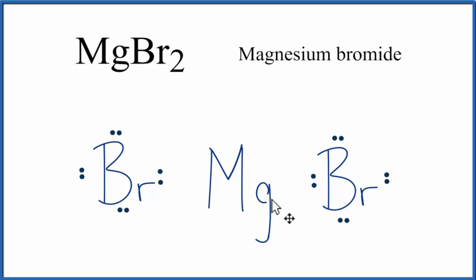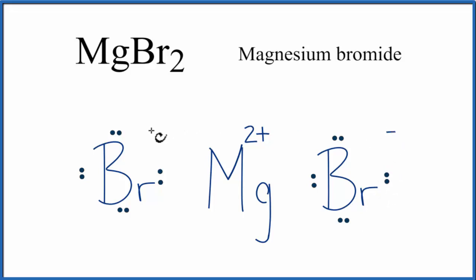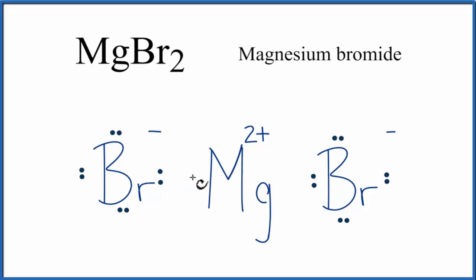The magnesium has lost 2 electrons, and since electrons are negative, it now has a 2+ charge. The bromines have each received one electron, so they each have a negative charge. These charges all cancel out to give us a neutral molecule. The negatives are attracted to the positive, and that's what forms the ionic bonds here.